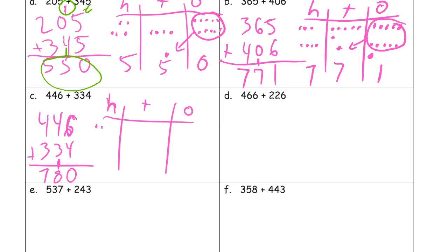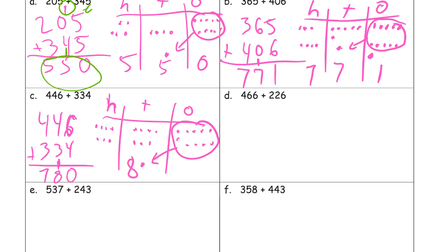Four hundred forty-six: four hundreds, four tens, six ones. Three hundred thirty-four: three hundreds, three tens, four ones. There's ten ones — there's the ten I had to compose. This makes eight tens if you count them all. Zero ones left over. Count the hundreds — seven of them.